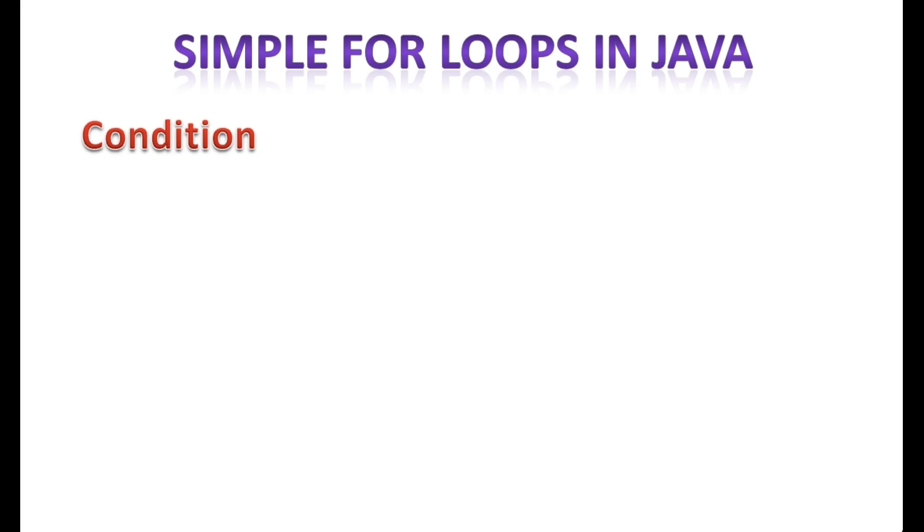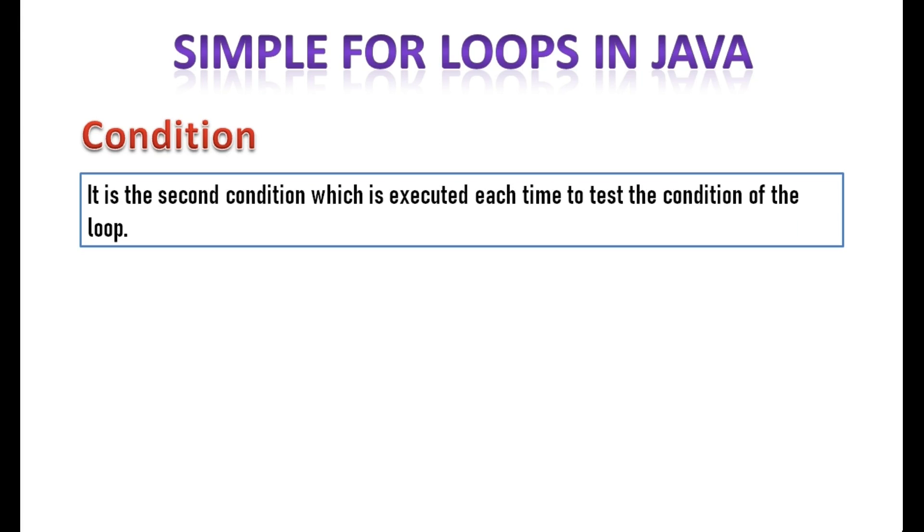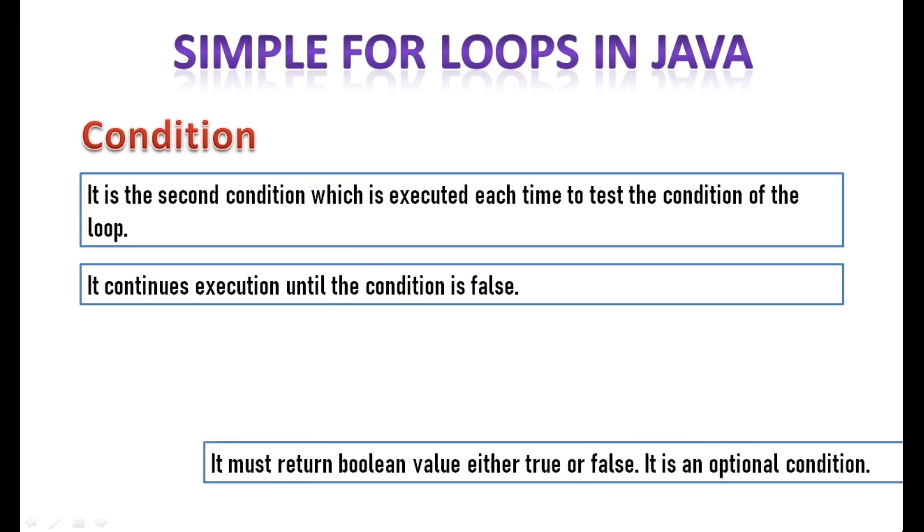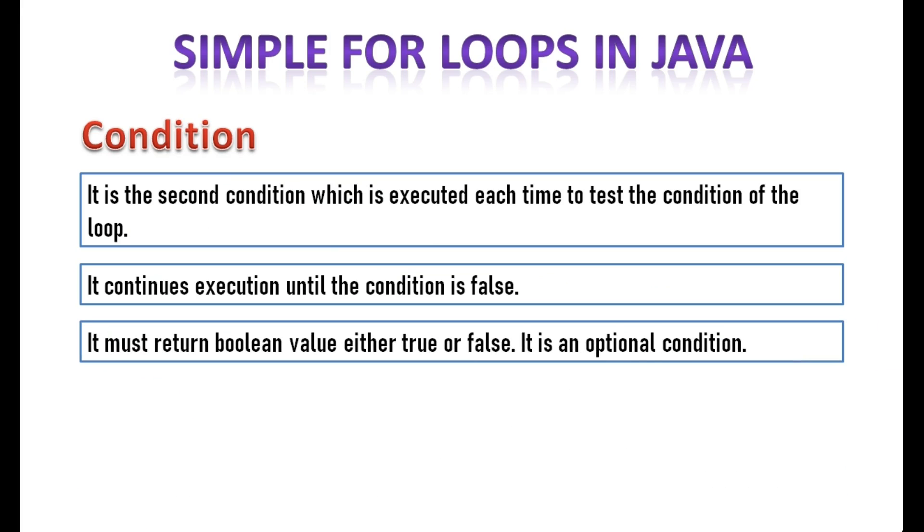Two, Condition. It is the second condition which is executed each time to test the condition of the loop. It continues execution until the condition is false. It must return boolean value either true or false. It is an optional condition.